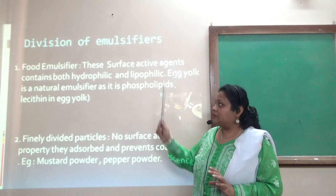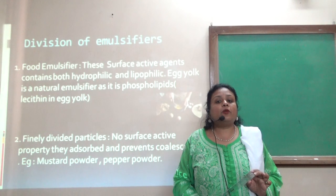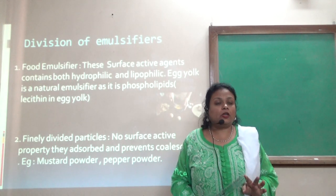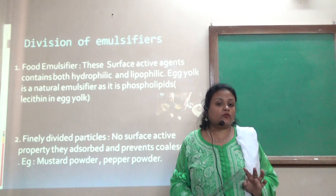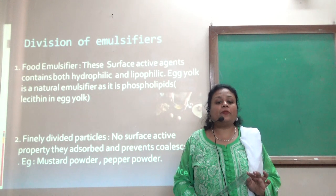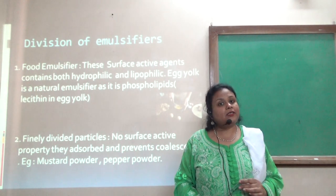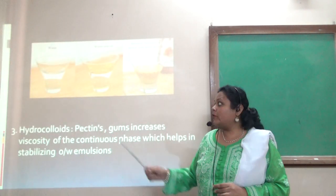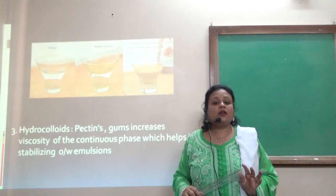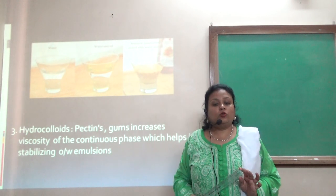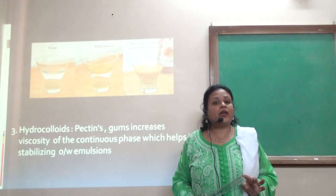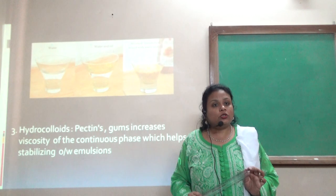Regarding the division of food emulsifiers: surface active agents contain both hydrophilic (water-loving) and lipophilic (fat-loving) parts — for example, egg yolk contains lecithin. Finely divided particles with no surface active properties adsorb and prevent coalescence, such as mustard powder and pepper powder. Hydrocolloids, which include pectins and gums, increase the viscosity of the continuous phase, which helps in stabilizing oil-in-water emulsions.